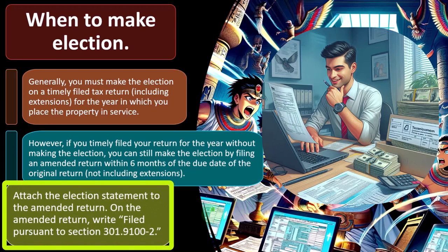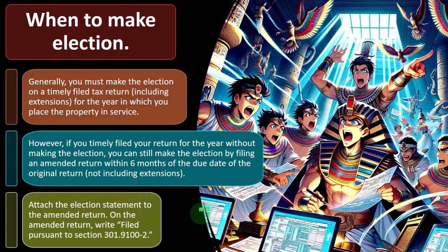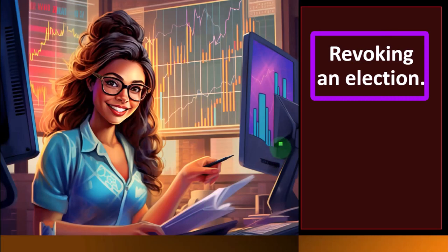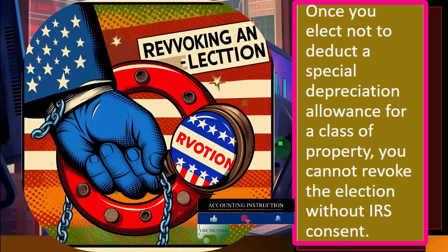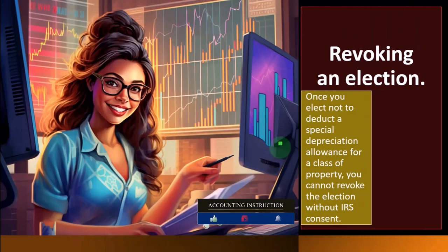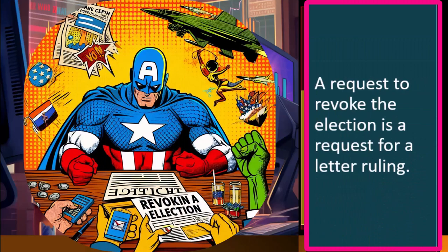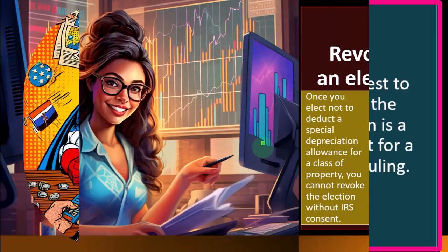Attach the election statement to the amended return, and on the amended return write 'Filed pursuant to section 301.9100-2.' Once you elect not to deduct a special depreciation allowance for a class of property, you cannot revoke the election without IRS approval. Think of it as an accounting method — you need consistency and can't simply change it. If you do need to revoke, that request constitutes a request for a letter ruling from the IRS, which is not a situation you'd typically want to be in — so try to get it right the first time.